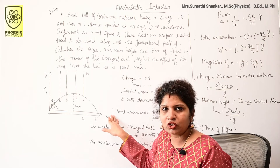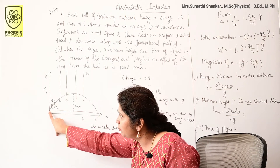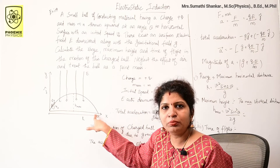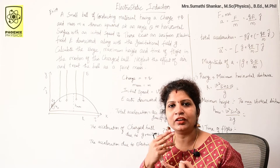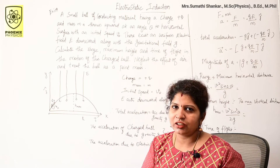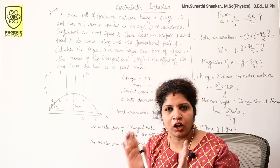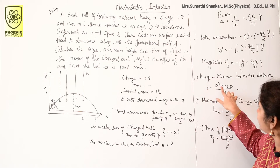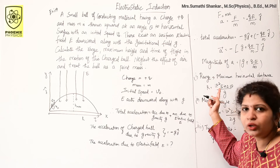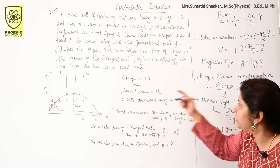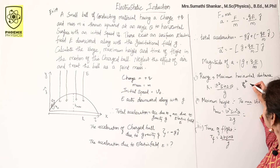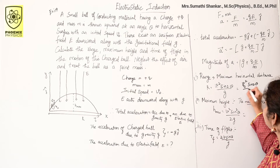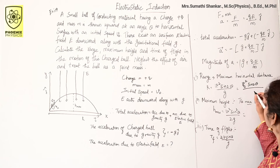What is range? Range is the maximum horizontal distance between the point of projection and the point at which the object hits the ground. We already studied the range formula in 11th standard — just apply it here. R = v² sin2θ / g. Our initial speed is v₀, and instead of g we substitute (g + qE/m), giving: R = v₀² sin2θ / (g + qE/m).